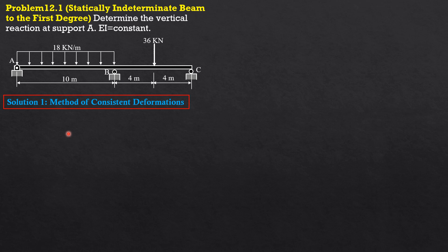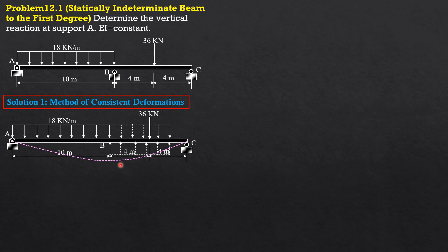First, I have to present the method of consistent deformations by selecting the reaction at B as the redundant force and removing it, so that it will deflect freely as shown. I apply the double integration method first. I'll call this deflection delta_B — this is expected negative. I have to extend this loading and counter it upward. The distance from this section to A is x. By the way, summation of moments about C equals 0.